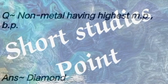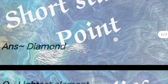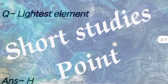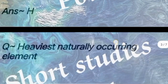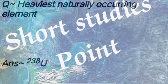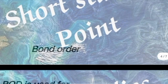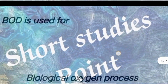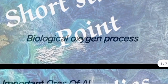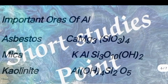Question: Non-metals having highest melting point or boiling point. Answer: Diamond. Next question: Lightest element. Answer: H (Hydrogen). Next question: Heaviest naturally occurring element. Answer: U-238 (Uranium). Next question: BU stands for. Answer: Bond Order. Next question: BOD stands for. Answer: Biological Oxygen Demand.